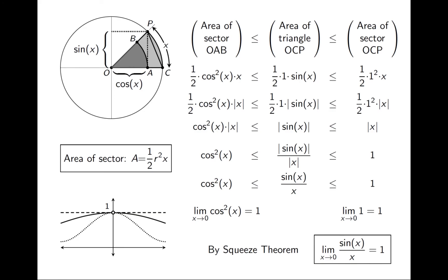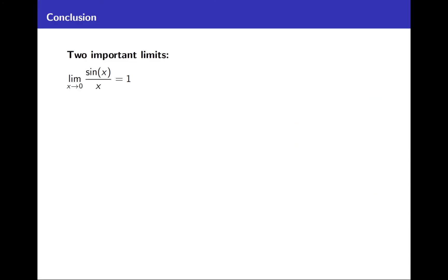We've just proved that the limit as x approaches 0 of sine x over x equals 1. It's possible that after today you will rarely have occasion to use the Squeeze Theorem — its primary purpose in this course has been to prove this limit. Still, it's a good tool to have in your toolbox. To conclude, we now have two important limits: the limit as x approaches 0 of sine x over x equals 1, and from our previous lecture, the limit as x approaches 0 of (1 − cos x) / x equals 0. In part three of the course, we'll need to use both of these limits.